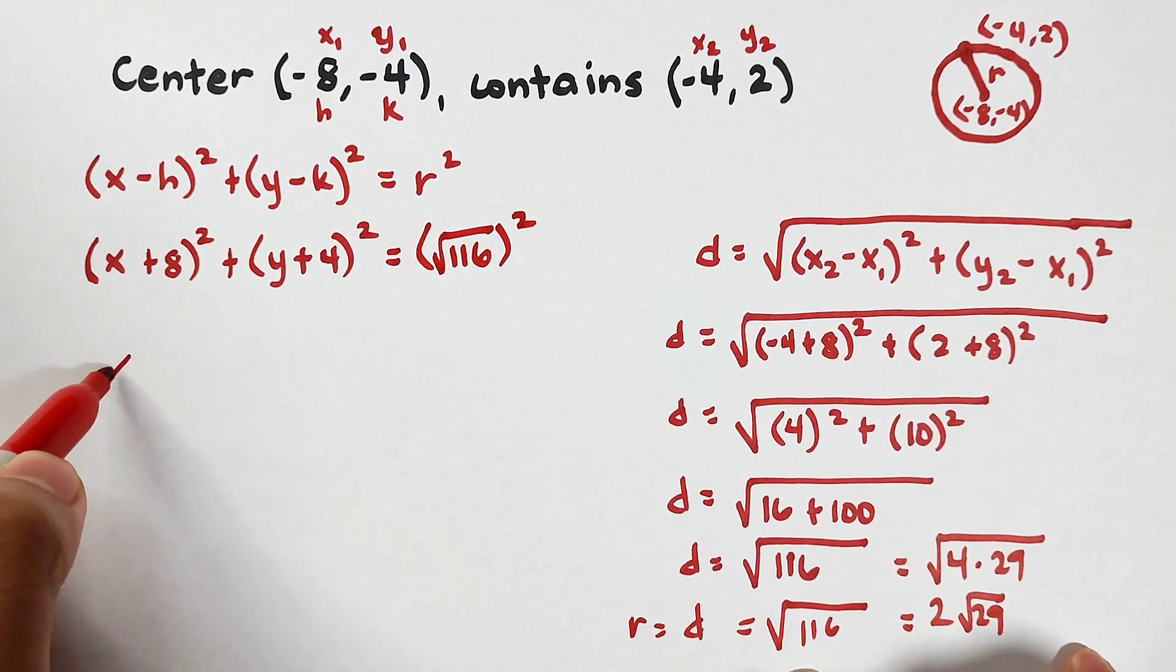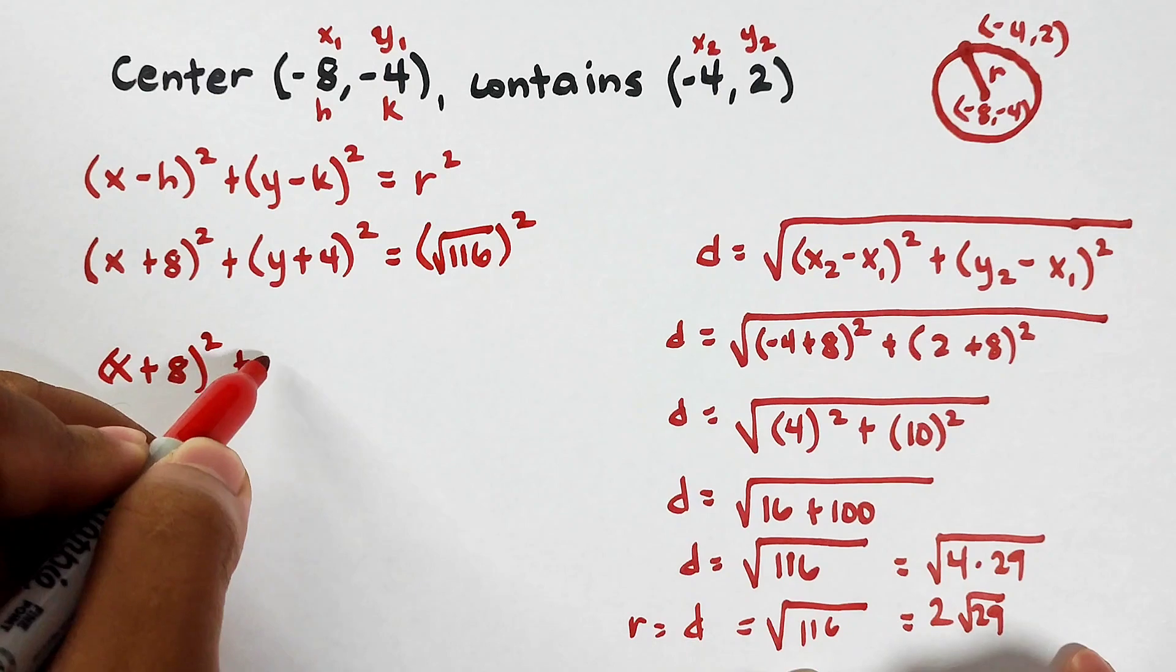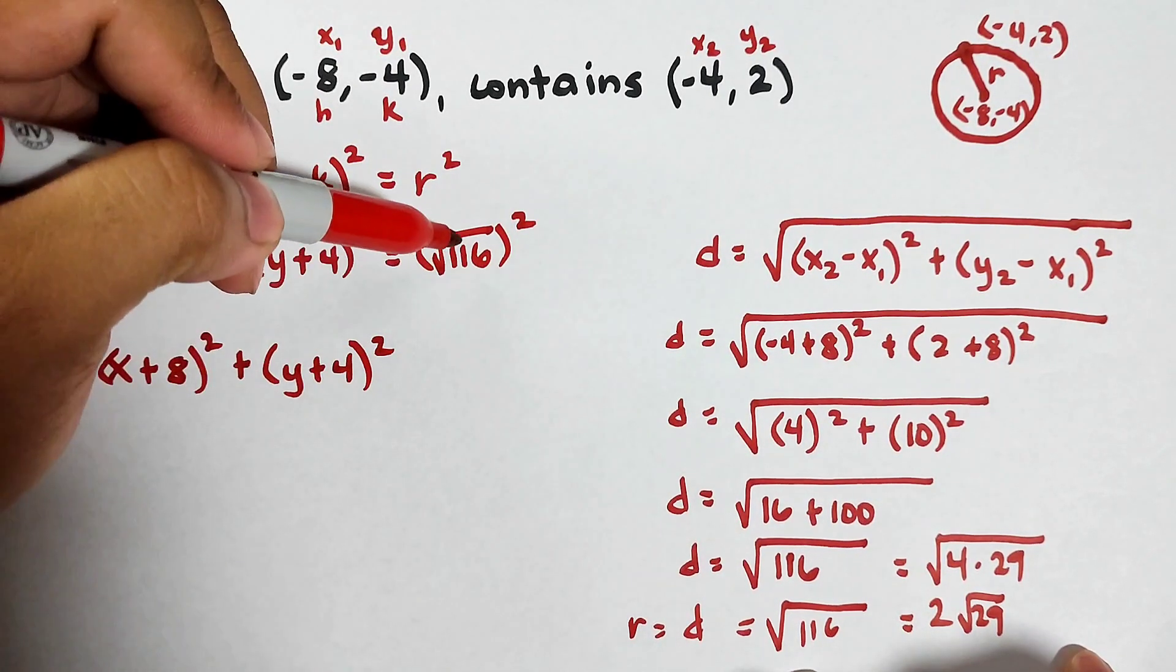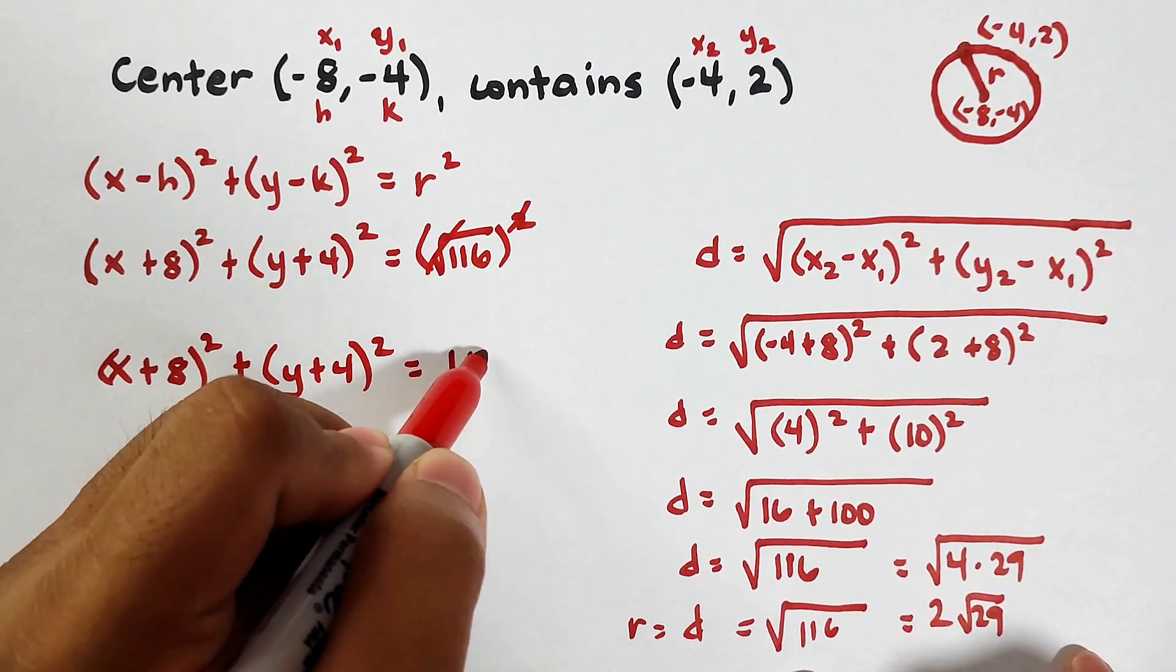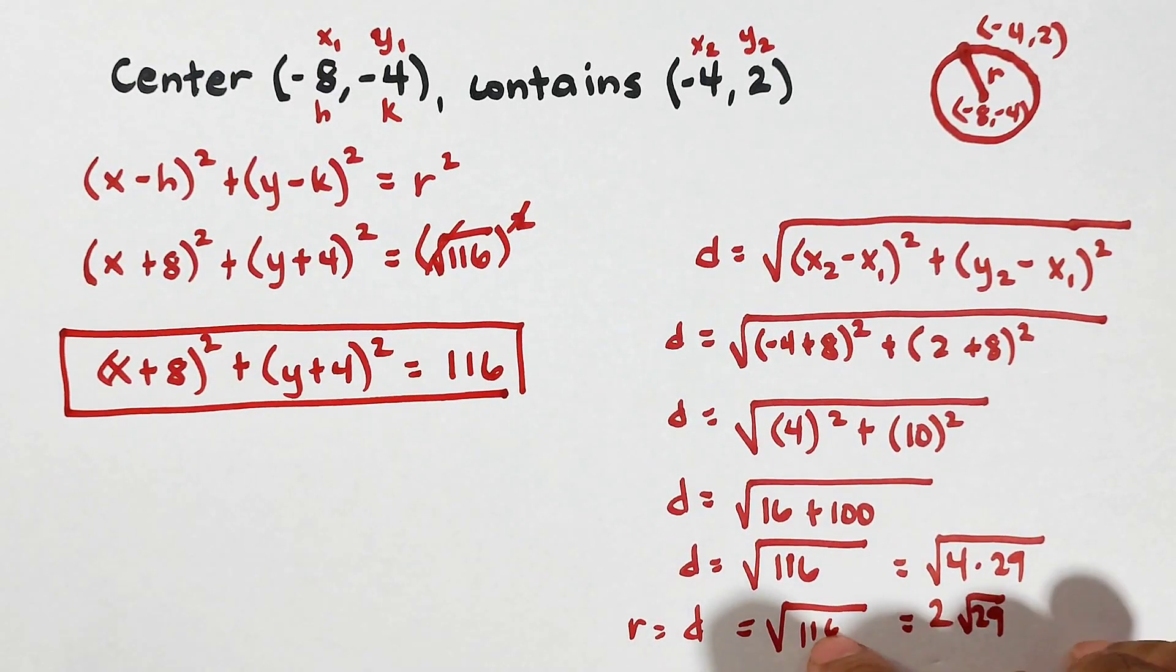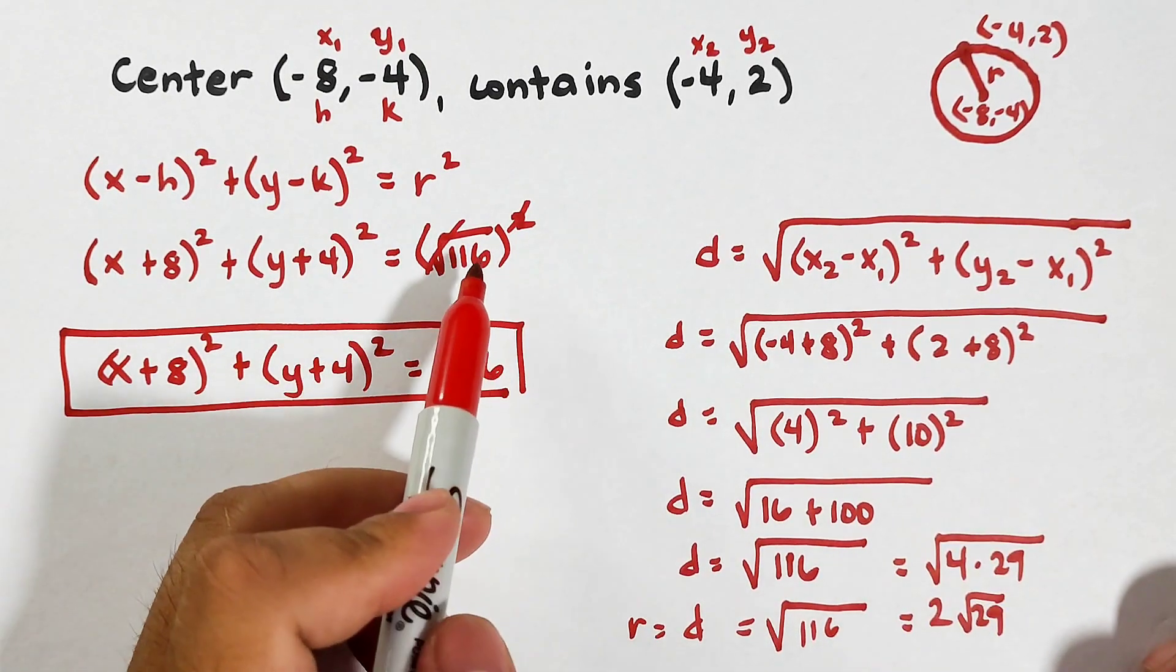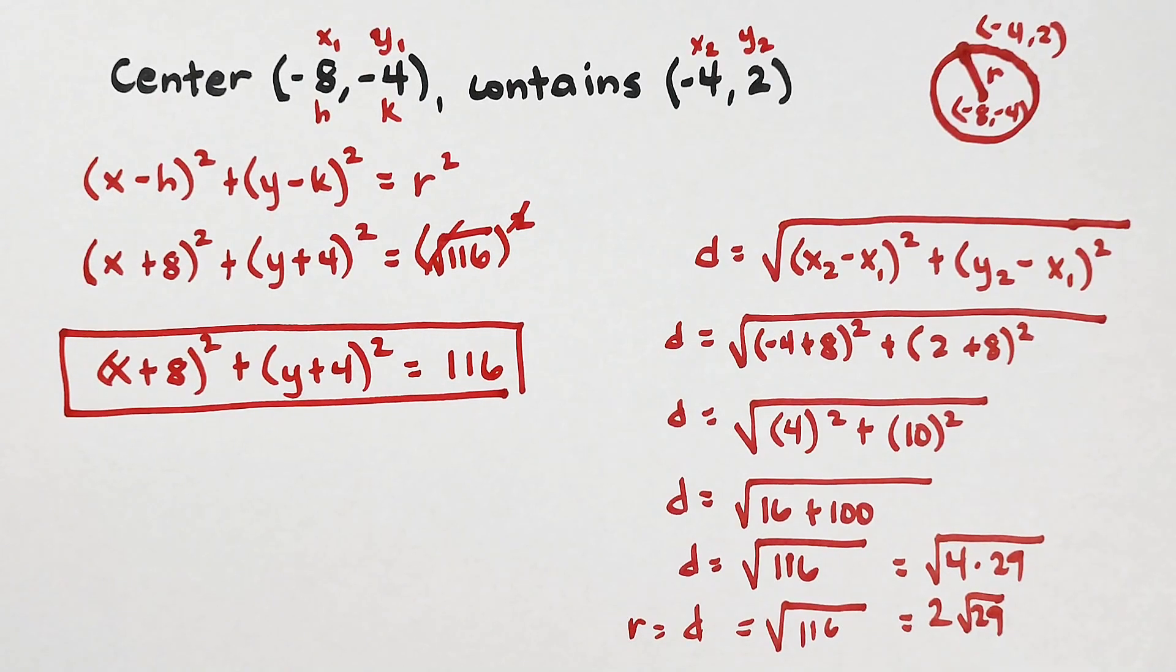Copy this. X plus 8 squared plus y plus 4 squared. And here, this will cancel. It will become 116. This is our actual answer. Now, why didn't I have you use 2 square root of 29? Because when we square 2 square root of 29, the result is also 116.